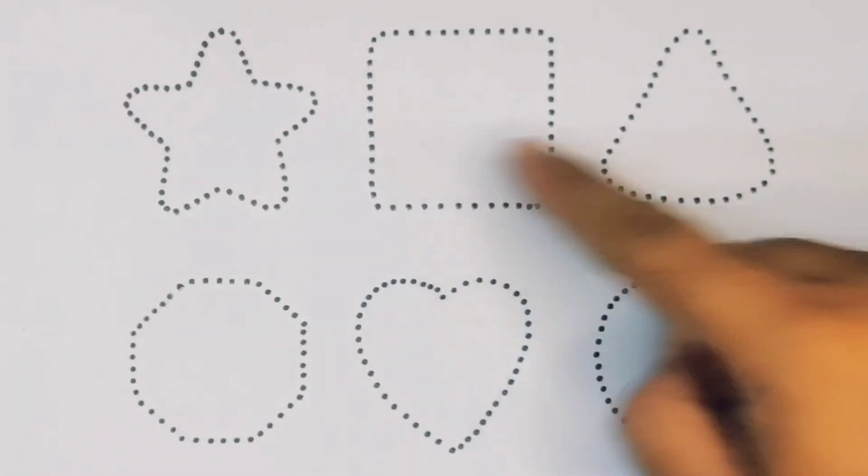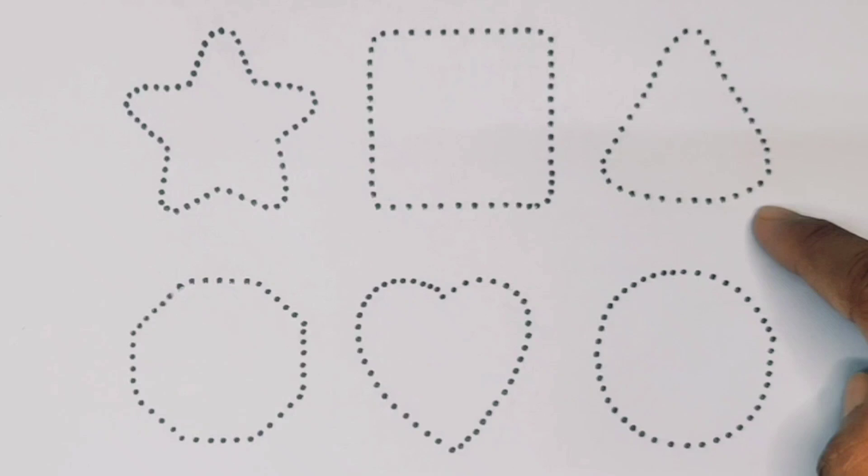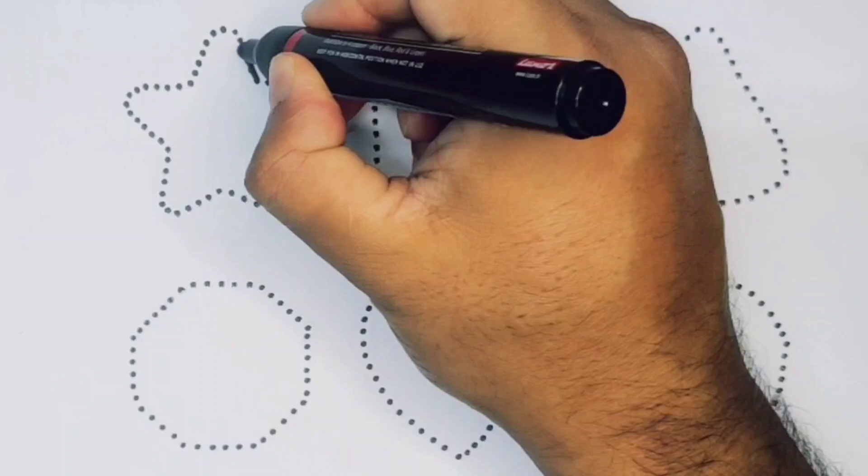Now let's learn the 2D shapes: star, square, triangle, decagon, heart, and circle. First we're going to draw the shapes.